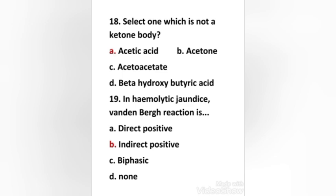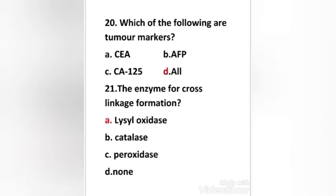Which of the following are tumor markers? CEA, AFP, CA 125, all. Right answer is option D: all of the above are tumor markers. CEA means carcinoembryonic antigen, AFP means alpha fetoprotein, CA 125 is cancer antigen 125. Right answer is option D: all of the above.